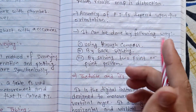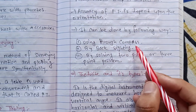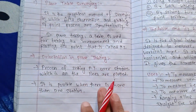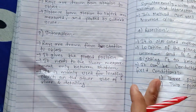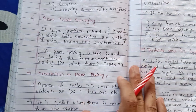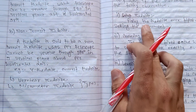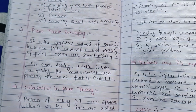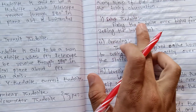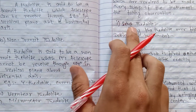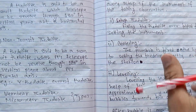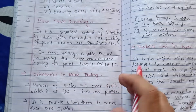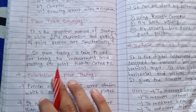Orientation can be done by the following ways: using a rough compass, by backsighting, or by solving the two-point or three-point problem. The steps in plane table surveying method are: set up, centering, and orientation.